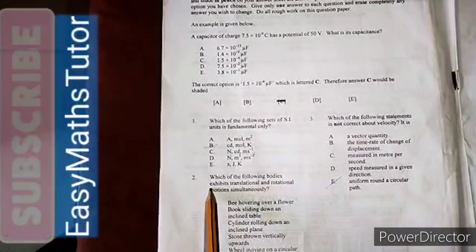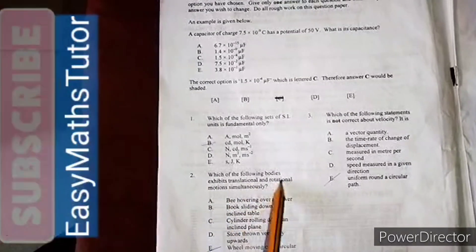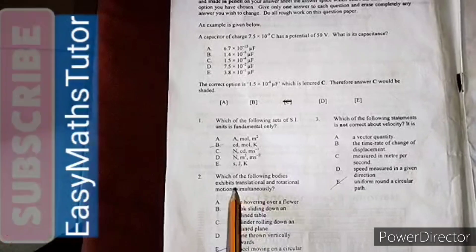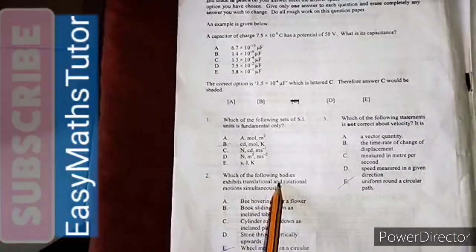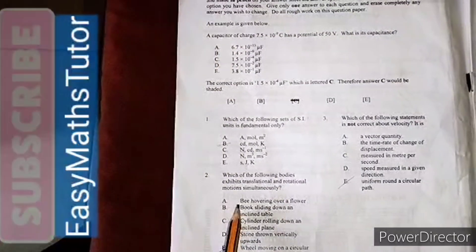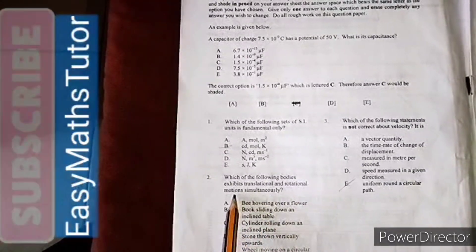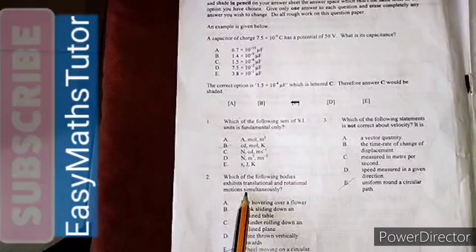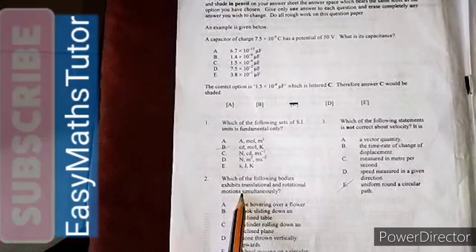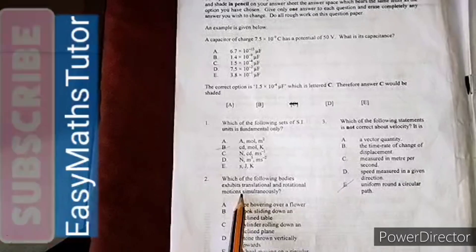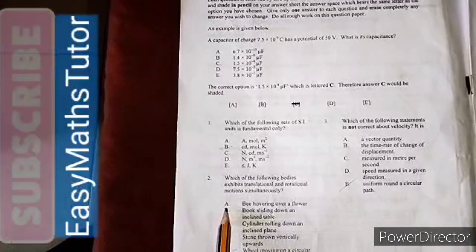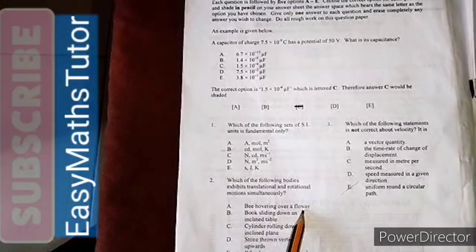Question two: Which of the following bodies exhibits translational and rotational motions simultaneously? We know what translational motion is - it's motion from one point to the other, while rotational motion has to do with circular motion or periodic motion, or moving and rotating from a fixed point.